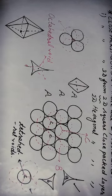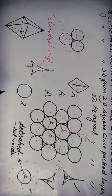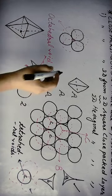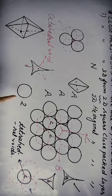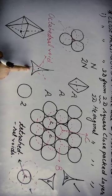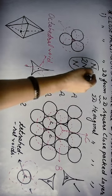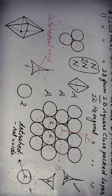One important point: the number of octahedral and tetrahedral voids associated with each sphere. There are two tetrahedral voids for each sphere and one octahedral void for each sphere. So if the number of spheres is N, then the number of tetrahedral voids is 2N and the number of octahedral voids is N — equal to the number of spheres. This is numerically very important.